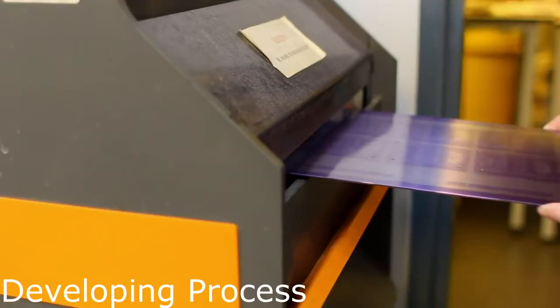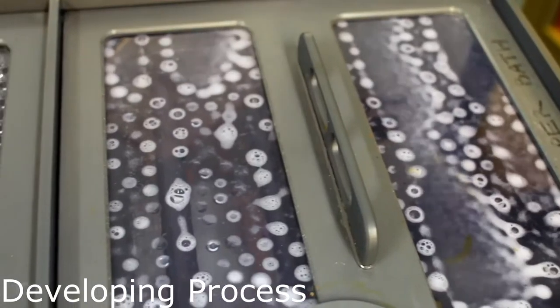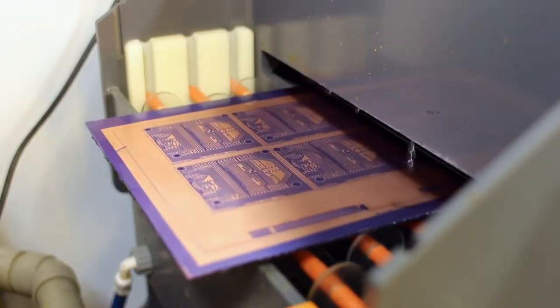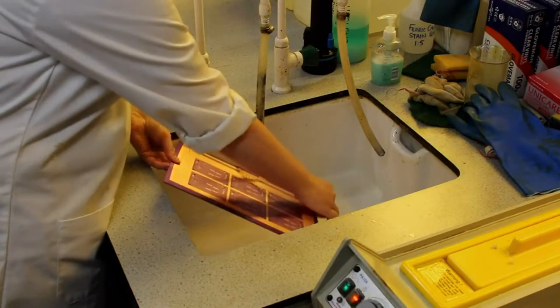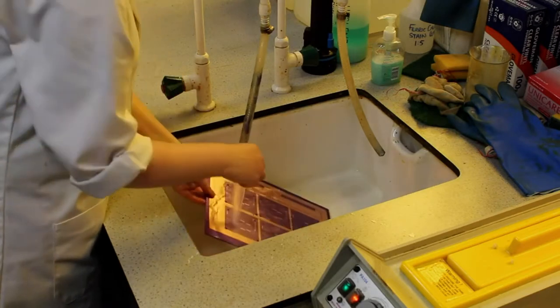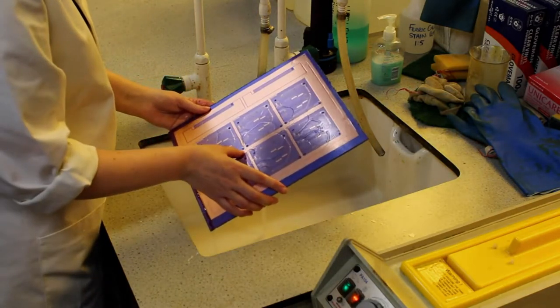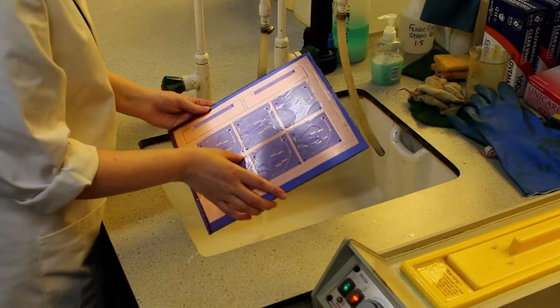The board is then passed through a developer machine to wash off the areas which haven't been exposed to UV light. It's then rinsed to wash away any remaining loose film. A visual check is done for any remaining resist film, broken tracks or other imperfections.